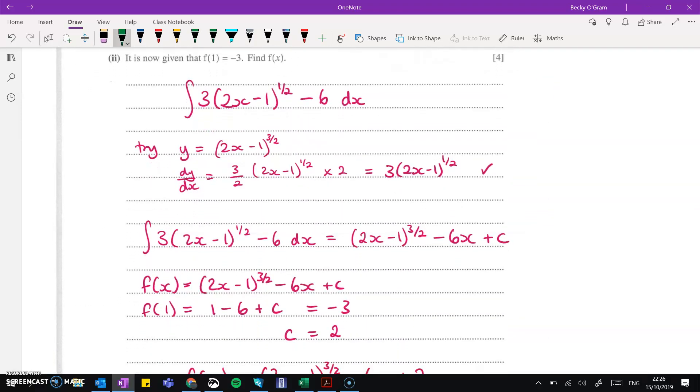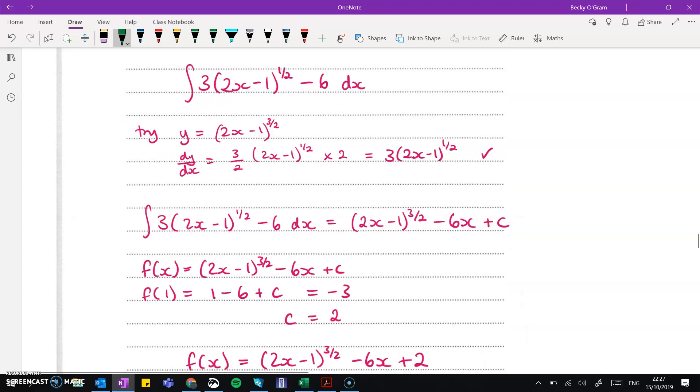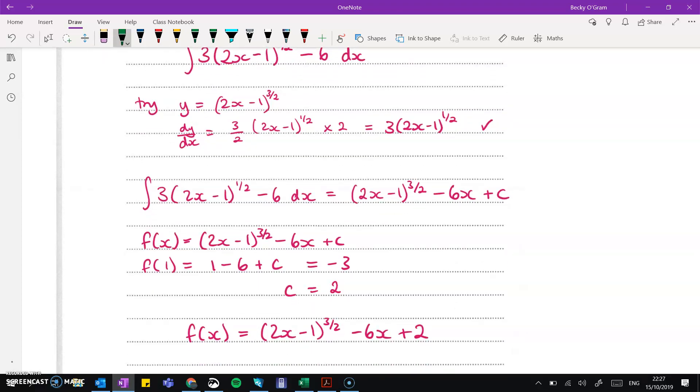So it's now given that f of 1 is minus 3, so find f of x. If we integrate the derivative, then we will get f of x. I'm doing the integration here using a bit of a guess and check method. So if we try raising that power by 1 and then differentiate, we can check it does get to the thing that we want it to be. The integral is then 2x minus 1 to the 3 over 2 minus 6x and then plus a constant. We use the f1 equals minus 3 to work out the constant. We can work out that c is 2 and our final answer of f of x is down here.